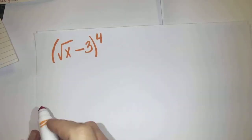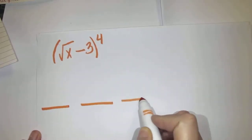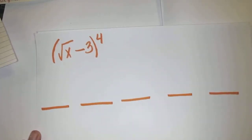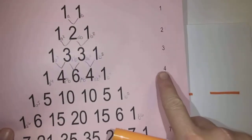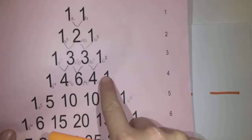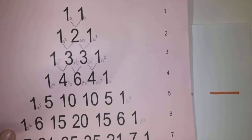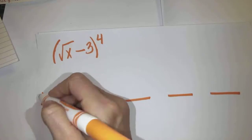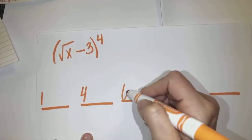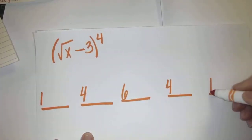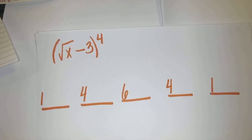Exponent is a 4, so I would draw 5 lines because I will have 5 terms. Then I will look on Pascal's triangle. When the exponent is a 4, these are my 5 numbers: 1, 4, 6, 4, 1. So step 1, draw your lines, get your numbers from Pascal's triangle.